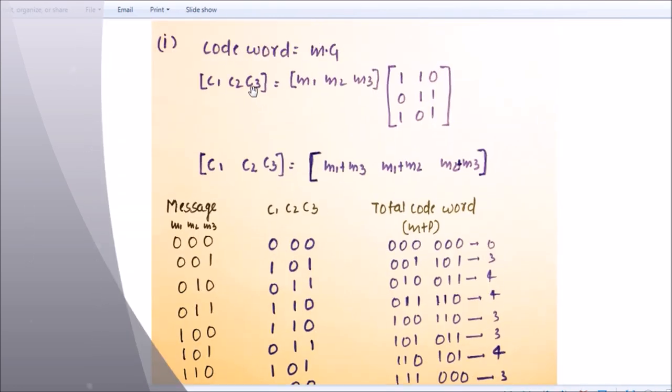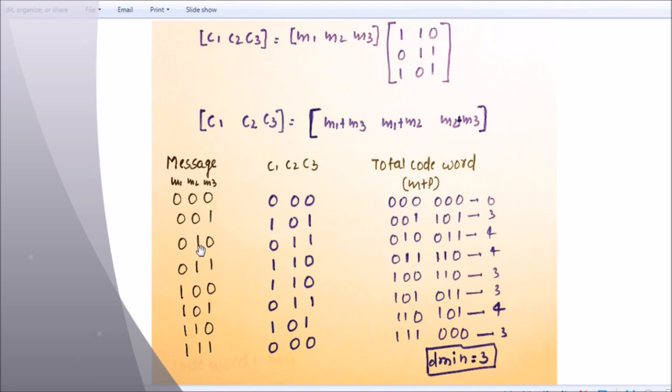So see here, the codeword is equal to m dot g, where m is your message m1, m2, m3, and this one is g. So you know how to multiply the matrix, it is m1 here, m1 plus m3 because m2 is 0, like this, like this, and like this. So c1, c2, c3 equals m1 plus m2, m1 plus m3, m1 plus m2, m2, m2 plus m3. Here your message is m1, m2, m3.